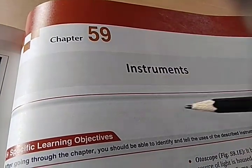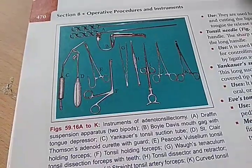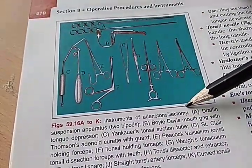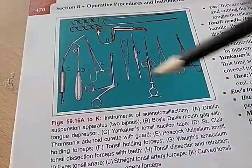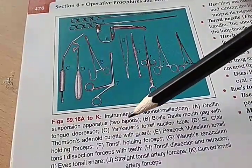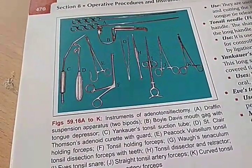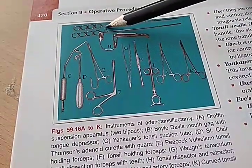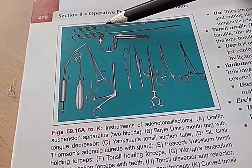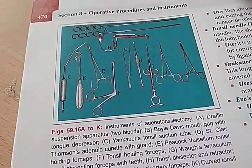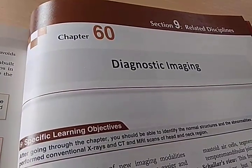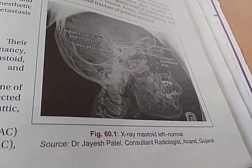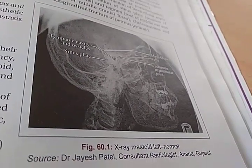The book is also covering instruments — here are all the instruments used in adenotonsillectomy, including a Draftyn suspension apparatus and two bipods. Some radiology is also covered, like X-ray of the mastoid on the left, normal — good that they always show a normal image for comparison.